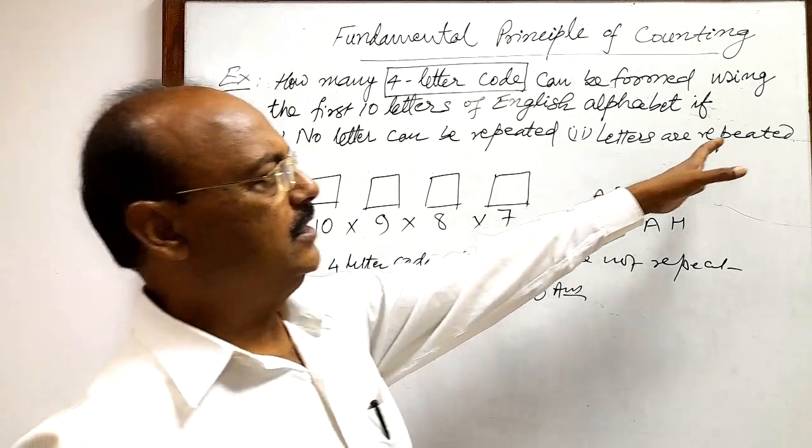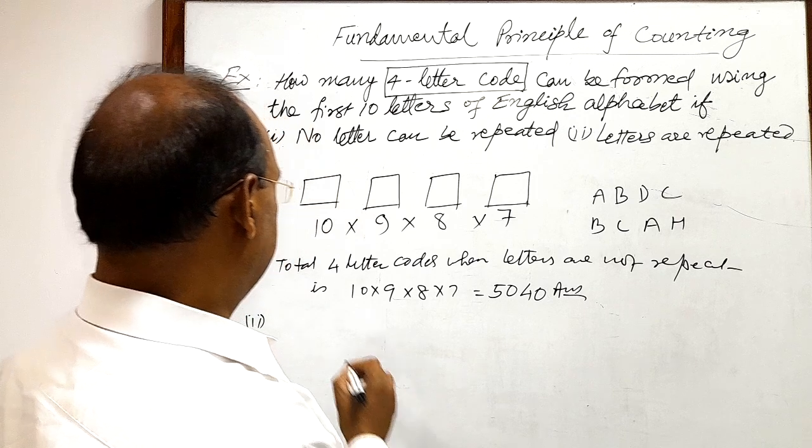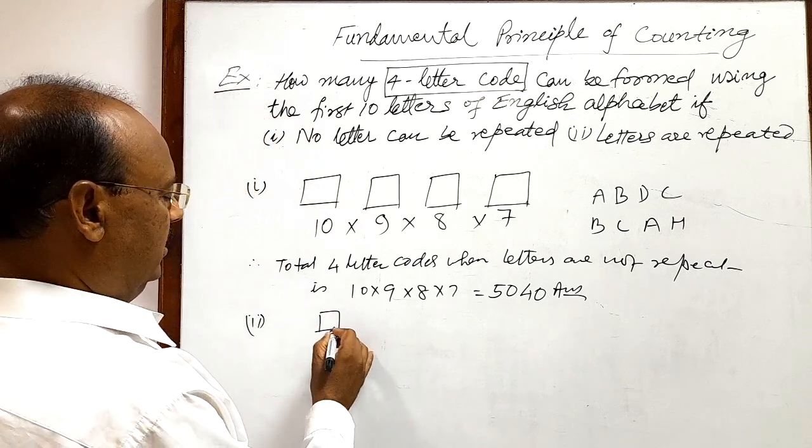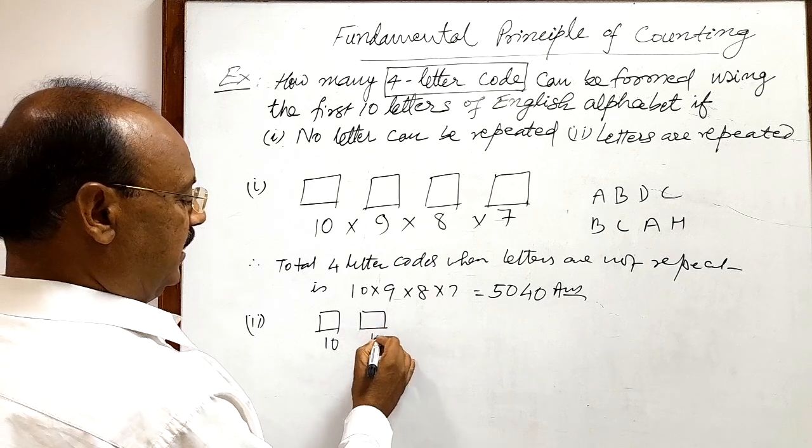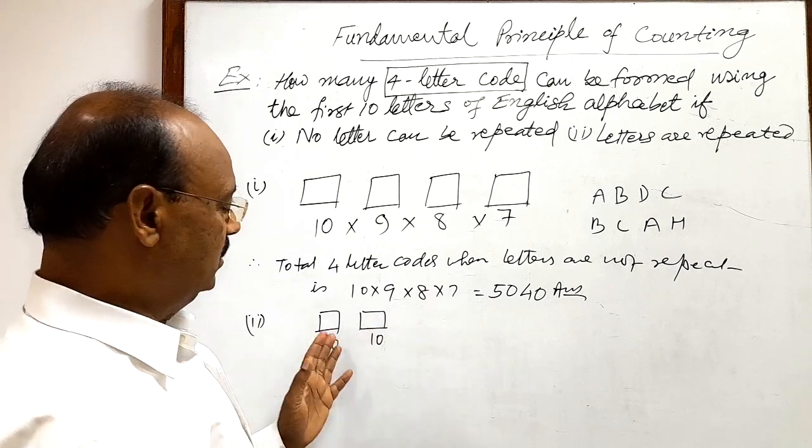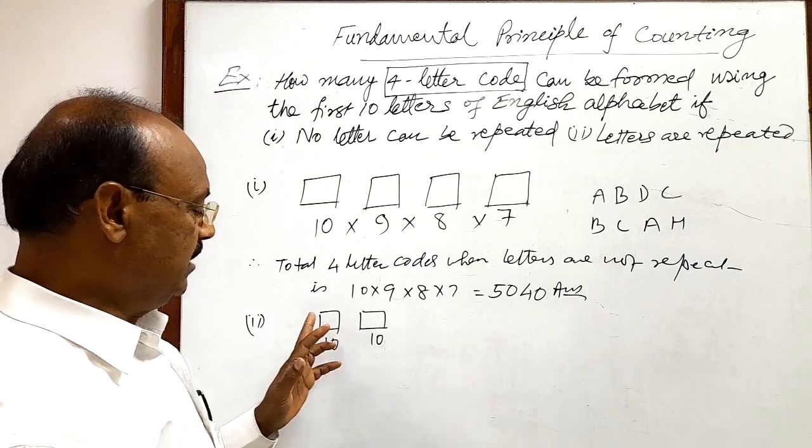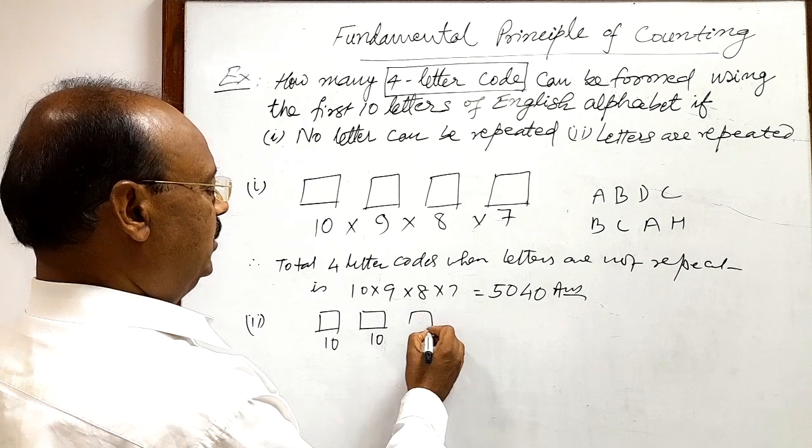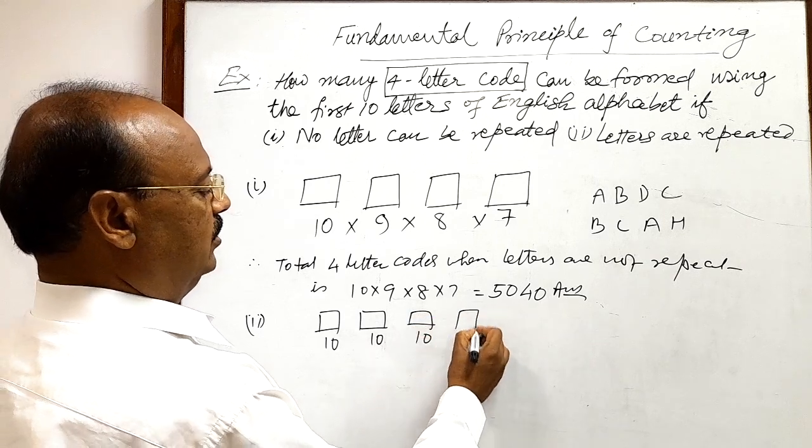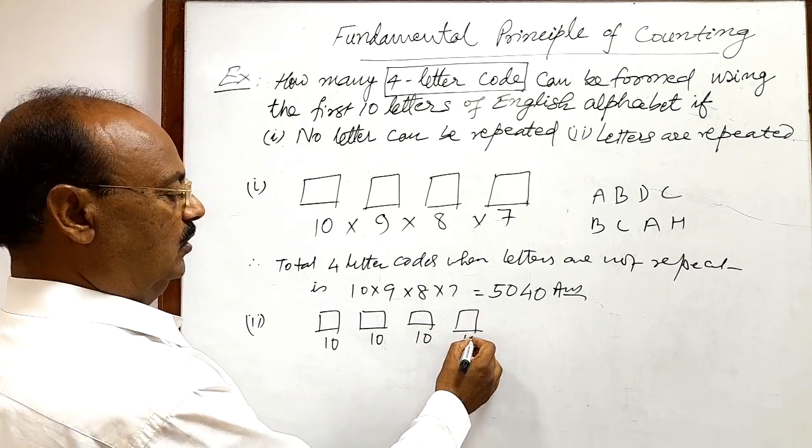Here, condition is letters are repeated. If letters will be repeated, then this first place can be filled in 10 different ways, second place again 10 different ways because letters can be repeated. So, the letter which has been used here can also be reused. So, 10 into 10 into 10 into 10.